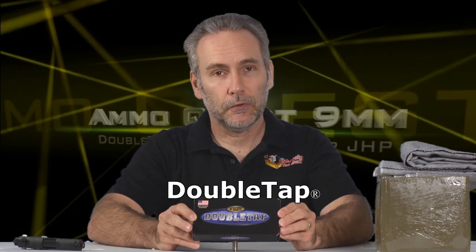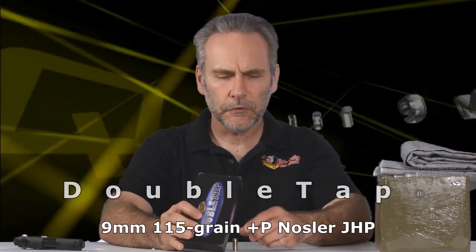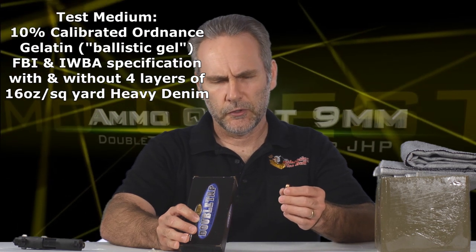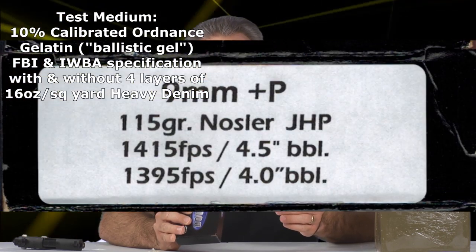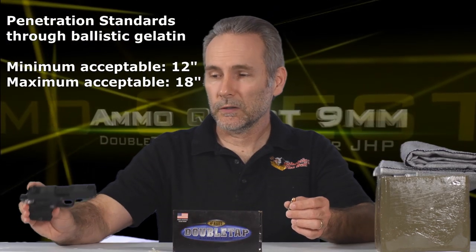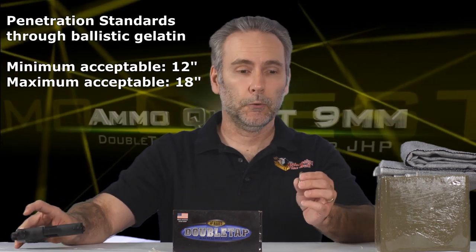Double tap. I had a viewer send this to me. He's very interested in this because it's a plus P round, 9mm 115 grain. It says that it is a Nosler jacketed hollow point and the velocity is just kind of insane. It says 1,395 feet per second out of a four inch barrel. That sounds potent. Let's find out what it'll do from a three inch barrel through ballistic gel.